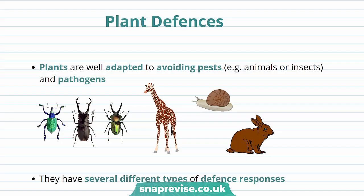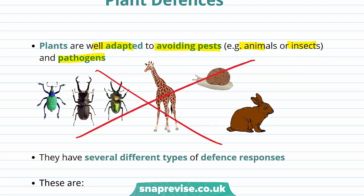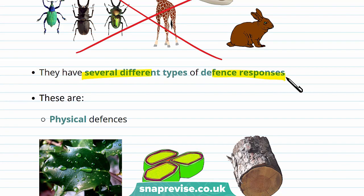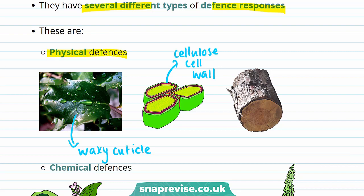Unlike animals, plants are stationary most of the time. This means that they can't run or escape from predators, so plants have to be well adapted to avoiding pests — for example, animals or insects — as well as pathogens. They do this through several different types of defence response, including physical defences such as a waxy cuticle, a cellulose cell wall, and dead cells surrounding the plant.